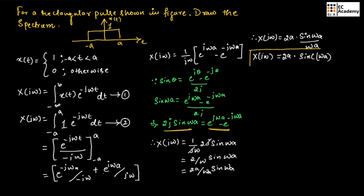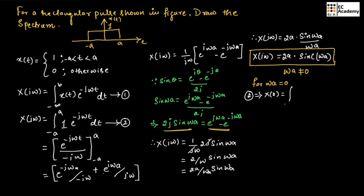This Fourier transform result is obtained for ωA not equal to 0. For ωA equal to 0, let us consider equation 2 and put ω as 0. So x(j·0) equals the integration from minus A to A of exponential to the power of 0 dT. Integrating this gives T with limits minus A to A. Applying the limits, we get 2A. So at ω equal to 0, the value is 2A.